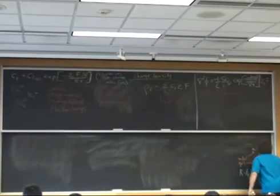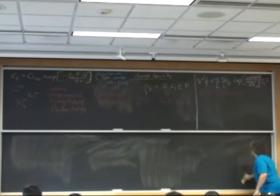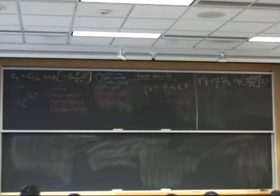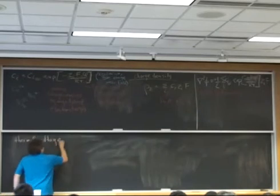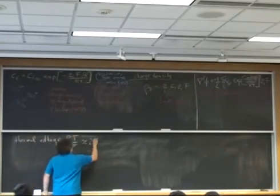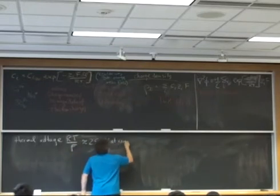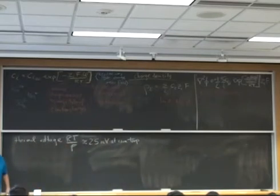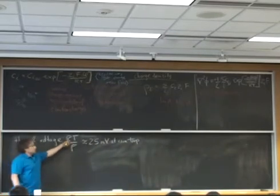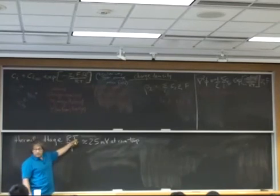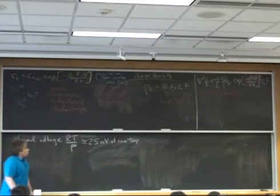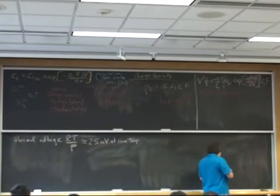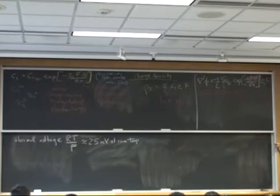I have an argument of the exponential function: minus z_i times F times phi over RT. The argument of the exponential function must be dimensionless, and that makes me immediately realize that a key non-dimensional quantity must be sitting inside the argument of the exponential function. Specifically, that parameter is the thermal voltage RT over F. I just get this by taking the universal molar gas constant times 298 Kelvin divided by the Faraday constant, and I get about 25 millivolts.